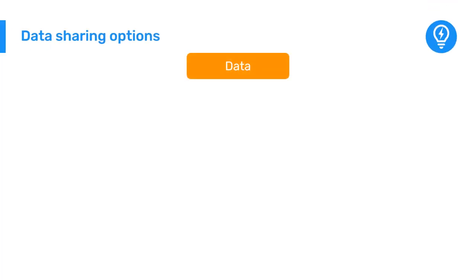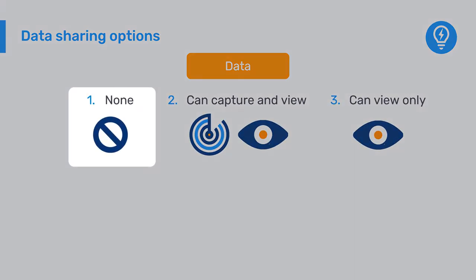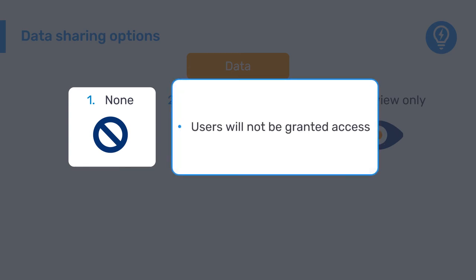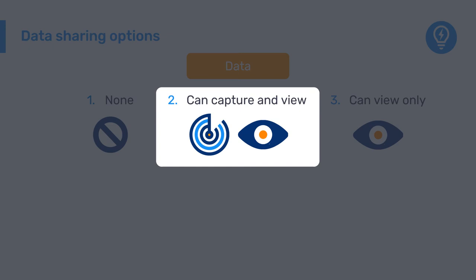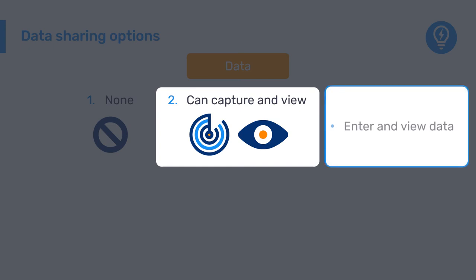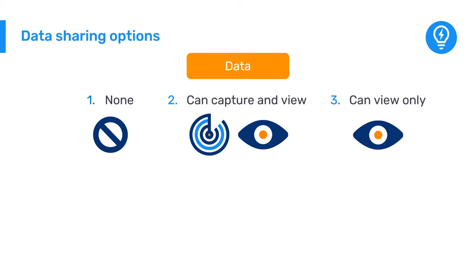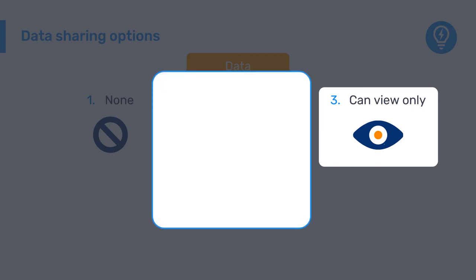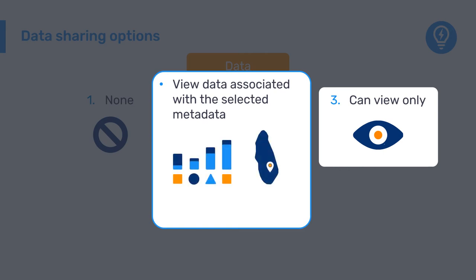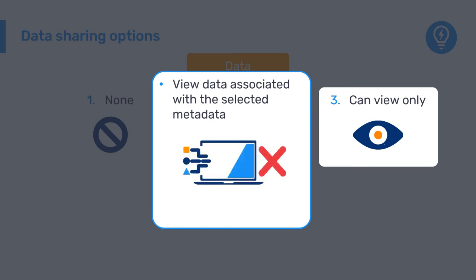For data sharing, there are also three levels of access. The first is none — a user or user group will not be granted access to the data of the selected metadata object at all, for example no access to view data entered for a particular dataset. The second is can capture and view, which allows a user or user group to enter and view data associated with the selected metadata; to enter data, they would also need access to the data entry app via their user role. The third is can view only, which allows a user to only view data in analysis apps such as Data Visualizer and Maps, and they will not be able to open datasets within the data entry app, even for viewing purposes.